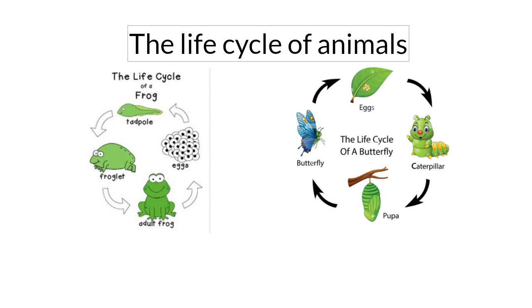Now you are going to be introduced to the life cycle of animals. We will begin with the life cycle of a frog. The first thing that we have is eggs. The eggs grow and become a tadpole.